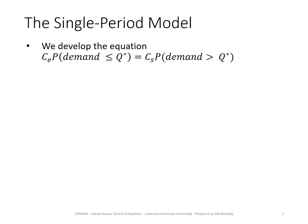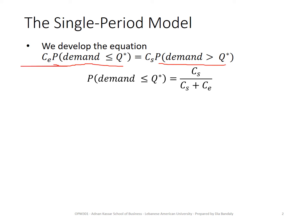At the optimal quantity we have this equality, and let's develop this equation. You may wonder — we had two probabilities, how do we end up with just one expression? Bear in mind that the event 'demand less than or equal to Q' and the event 'demand greater than Q' are complements, which means their probabilities sum to one. So one is equal to one minus the other, and that's why we can end up with only one expression of probability.